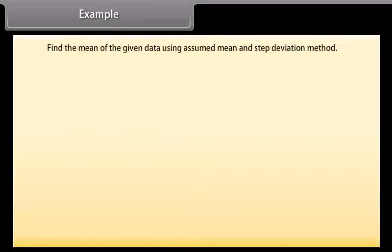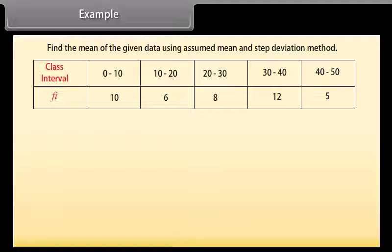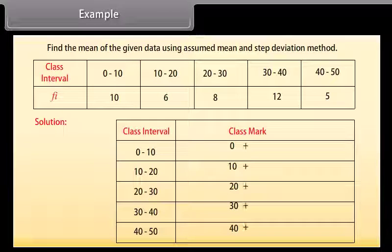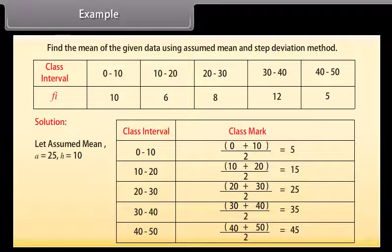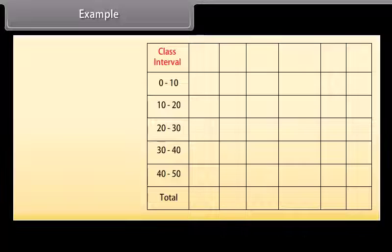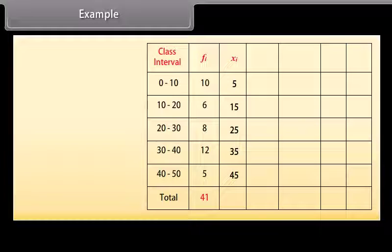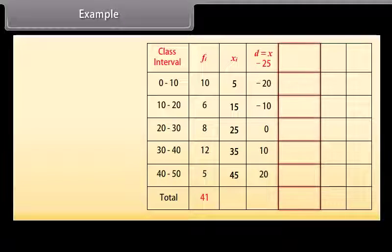Example: Find the mean of the given data using assumed mean and step deviation method. Solution: First, find the class mark for each class interval using the formula — class mark equals upper class limit plus lower class limit divided by 2. Let assumed mean A equal 25 and H equal 10. Write the class intervals in the first column and frequencies in the second column. The sum of frequencies is 41. Then write the class mark for each class interval as Xi, and in the fourth column find the deviation Di from the assumed mean.